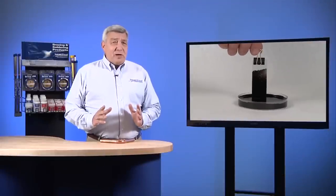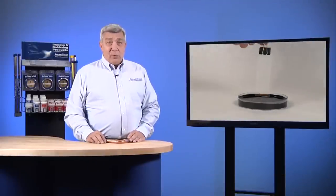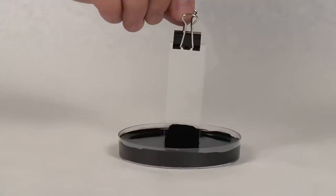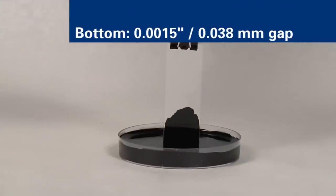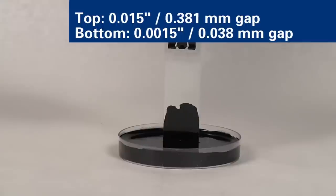Next, we'll demonstrate what will happen when we don't have a proper uniform clearance. These plates are separated by a one and a half thousandths of an inch shim at the bottom, and a thicker shim of fifteen thousandths at the top.